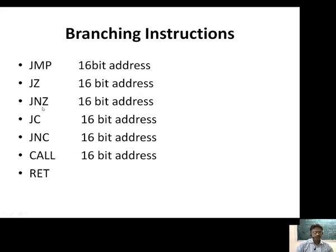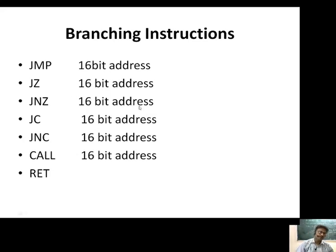The third instruction is JNZ — Jump on No Zero. If the Zero flag is not set, then only it will jump to the 16-bit address; otherwise it will execute the next instruction. This is also a conditional branching instruction.